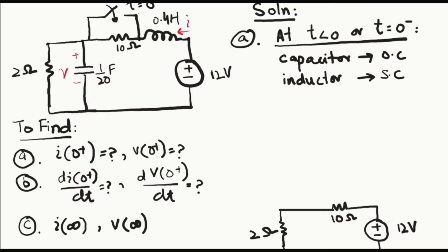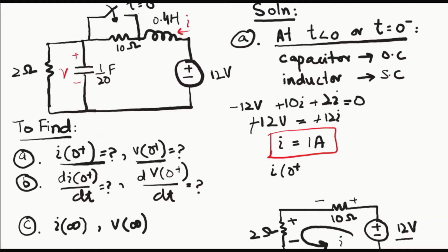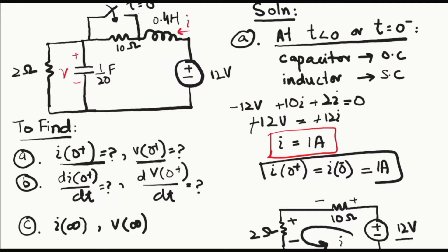Now we have two resistors with a voltage source of 12 volts — this is the simplified circuit. To find inductor current, we apply KVL: −12 + 10i + 2i = 0, which gives i = 1 ampere. So the current at time just before and after the switching time is the same: i(0+) = i(0−) = 1 ampere, because current does not change abruptly.